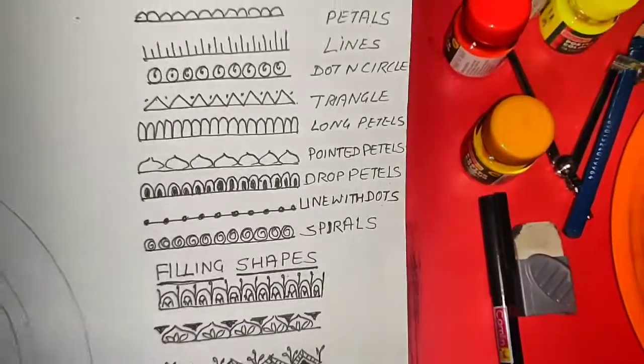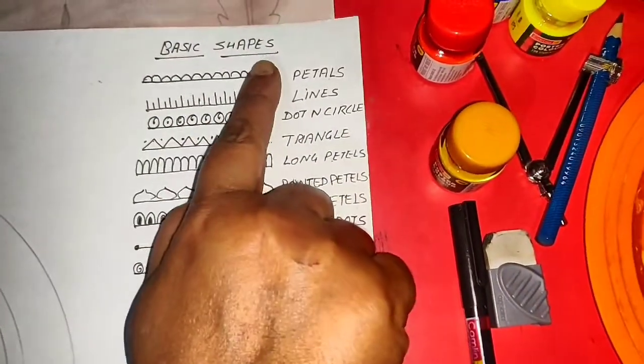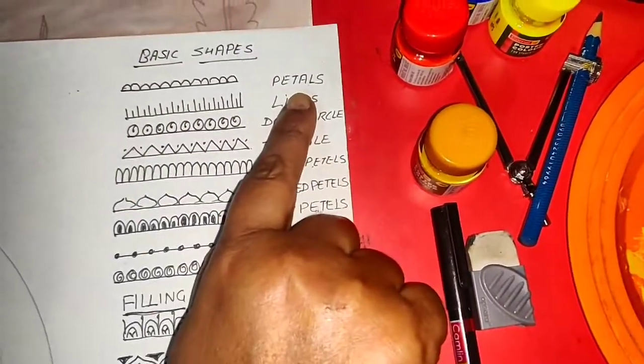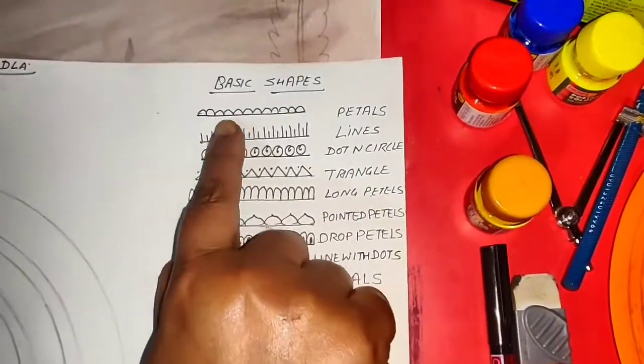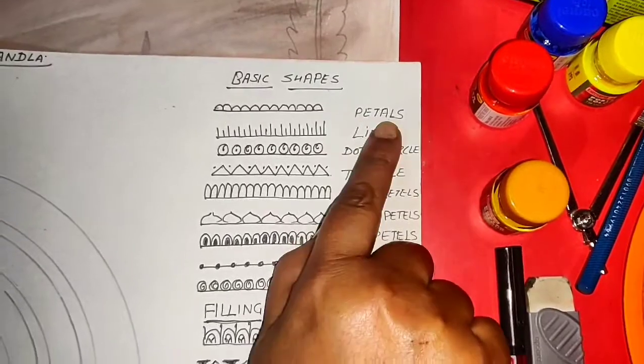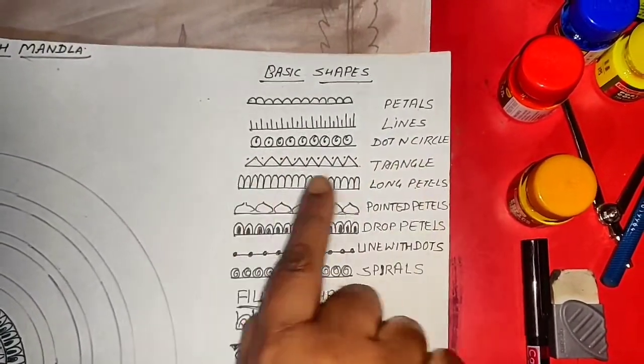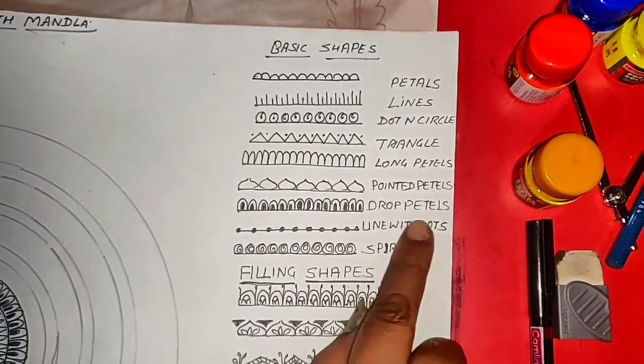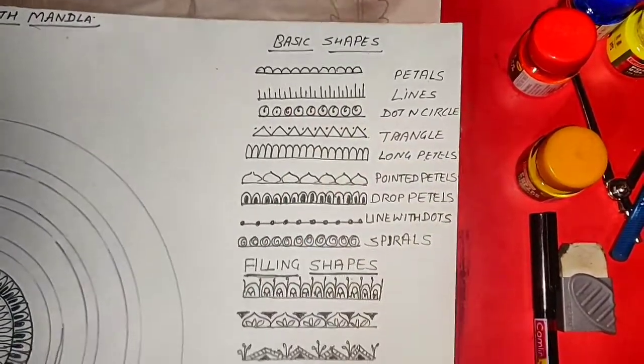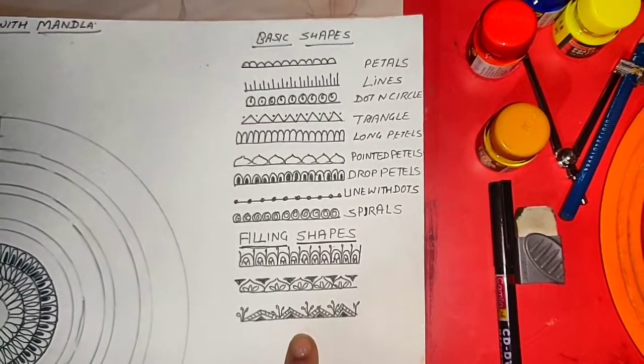Today we are going to make doodle art with a mandala, and for that we are using basic shapes, specifically shapes for a mandala. So here this is round petals and lines, dotted lines, dotted circles, triangles, round petals, pointed petals, and drawn petals. Like this way, you have to draw all the shapes for the mandala pattern.